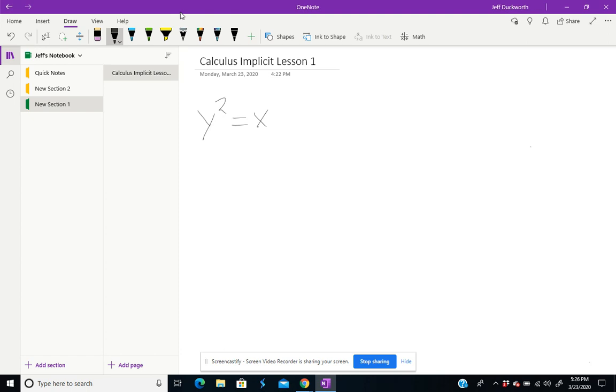So if I've got that problem, y squared equals x, if I just had y equals x, we know what to do with this. It's just y prime equals 1. Derivative of x to the first power is just 1.